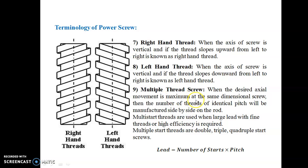A multiple thread screw is used when the desired axial movement must be maximized for the same dimensional screw. Multiple threads of identical pitch are manufactured side by side on the rod. Multi-start threads are used when a large lead with fine thread or high efficiency is required.